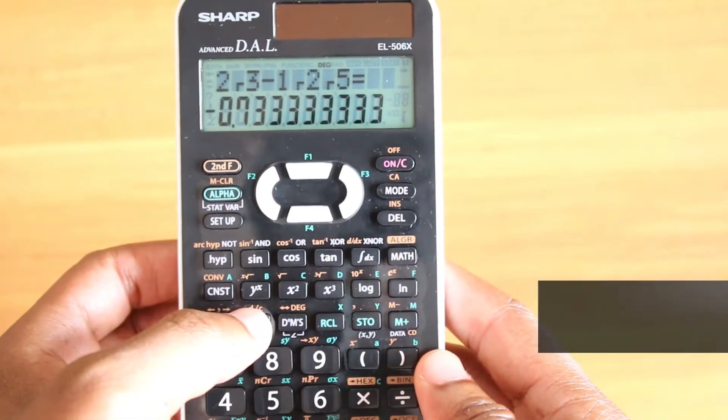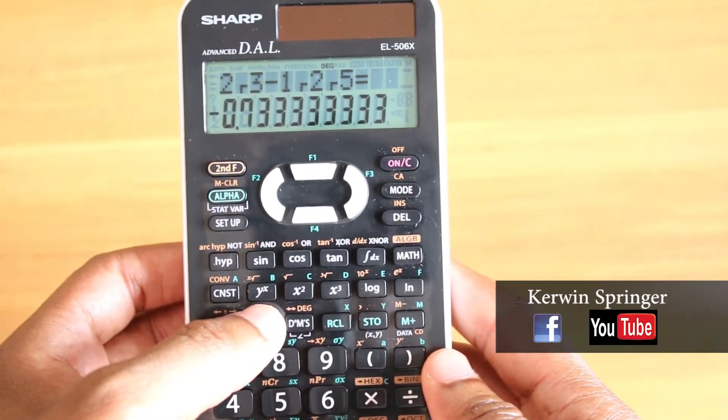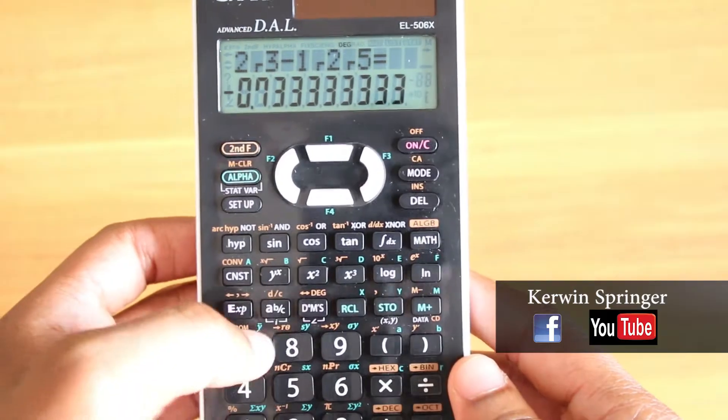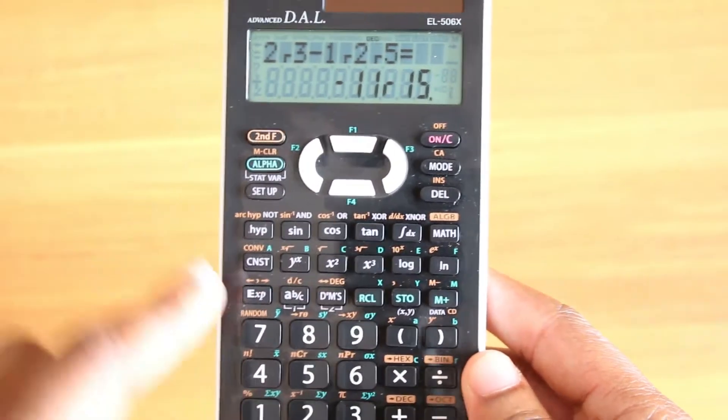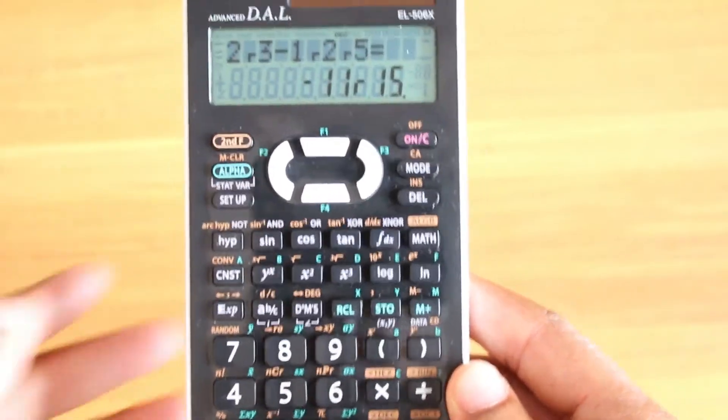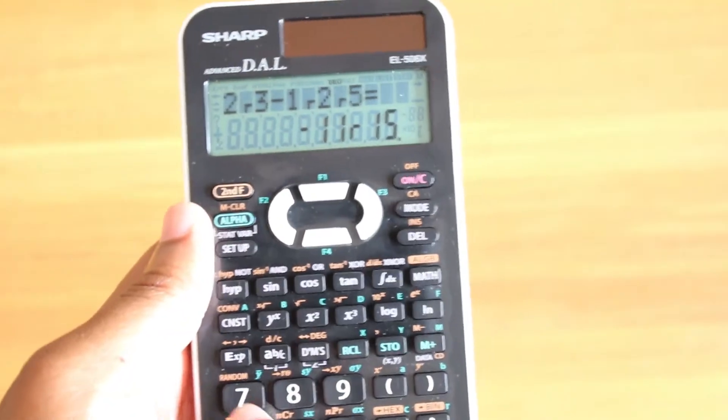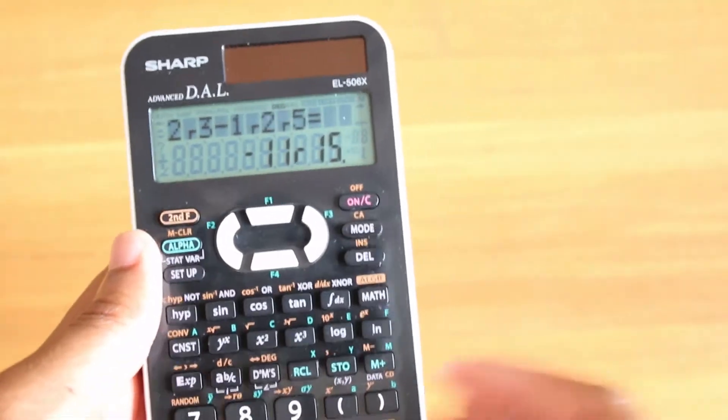Boom, decimals: negative 0.7333 recurring, and you can just switch back here. So this function is extreme. You can just type in the first question in your CSEC paper using this function and some brackets.